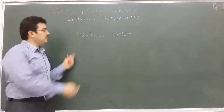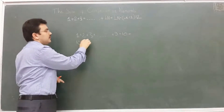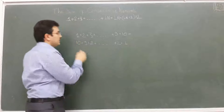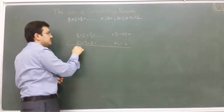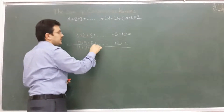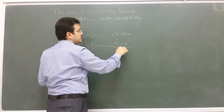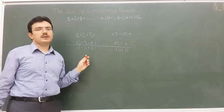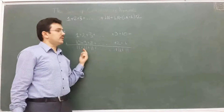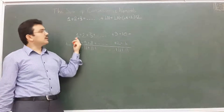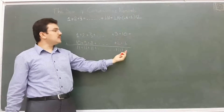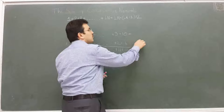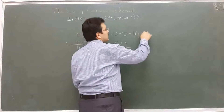To find an easy way, I wrote the numbers from one to ten, then wrote them again in reverse underneath. So we have 1 and 10, 2 and 9, 3 and 8, and so on down to 9 and 2, and 10 and 1. If we add each pair: one plus ten is eleven, two plus nine is eleven, three plus eight is eleven — all pairs sum to eleven. There are ten numbers, so there are ten elevens.